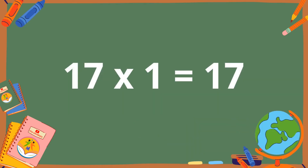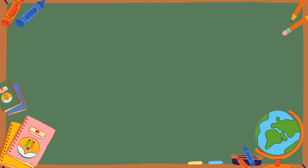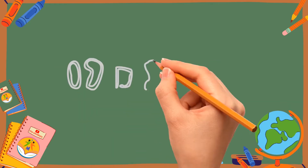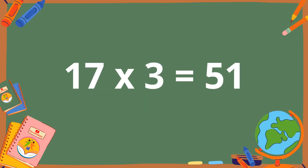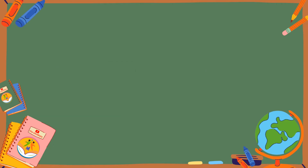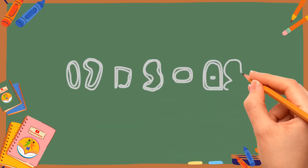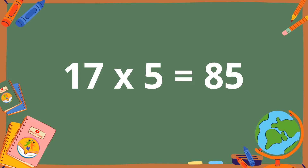17 ones are 17. 17 twos are 34. 17 threes are 51. 17 fours are 68.